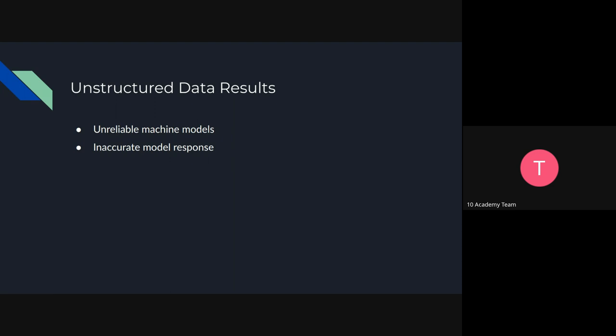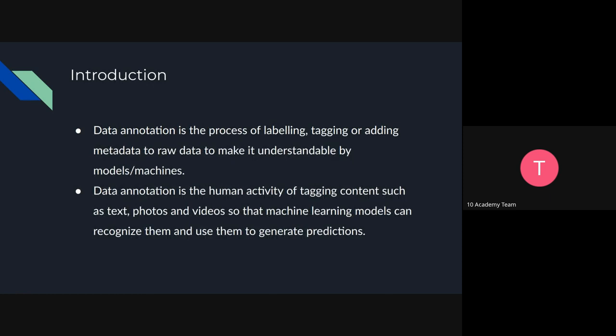Annotations will help us get more accurate model responses. By definition, data annotation is a process of labeling, tagging, or adding metadata to data — it could be one or all of these things — depending on the data and the information we want to pass to make it understandable by the models. At the end of the day, machines don't automatically detect what data contains perfectly.